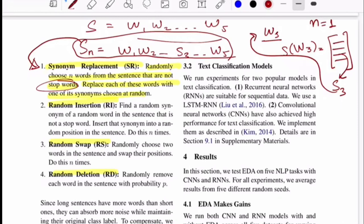The second rule they suggest is find a random synonym of a random word in a sentence that is not a stop word, insert that synonym into a random position in the sentence, and repeat this step a number of times. Synonym replacement was in-place replacement, so the length of the original sequence didn't get affected, whereas in this case since you are inserting a synonym at random positions, the length is going to increase. It depends on how many times you do it. If you do it n times, the length will increase by the same number of tokens.